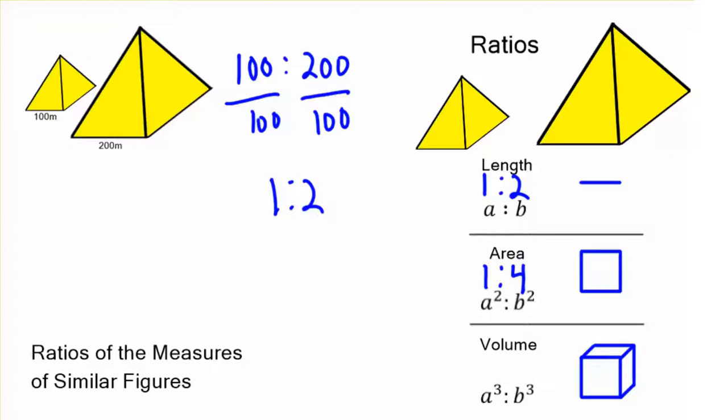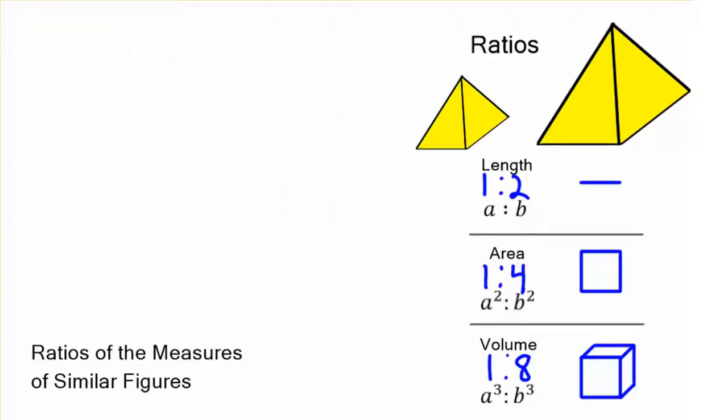The areas are going to be 1 squared to 2 squared, 1 to 4. The area of the base, the area of those triangles, they're all going to have a ratio of 1 to 4. And volume will be 1 to 8. 1 cubed to 2 cubed. 2 times 2 times 2 is 8.